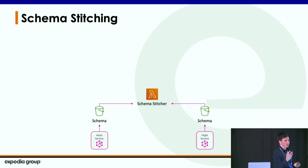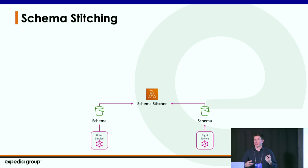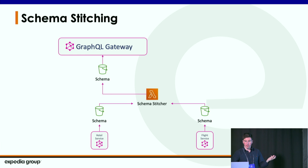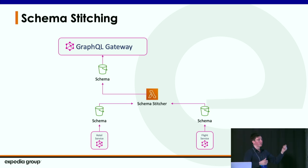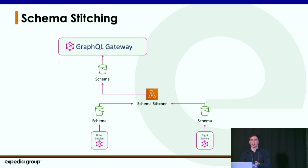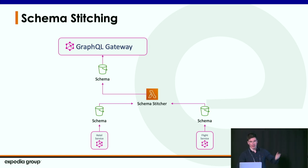We now have a new model: at build time when a change is made and approved to a schema like the hotel service, they push their schema to an S3 bucket. That S3 bucket is watched by a Lambda which has our schema stitching code. Every individual service can have their own bucket. The Lambda is notified whenever a bucket update is made, gets the latest version, stitches the schema, and pushes out to another S3 bucket — the global schema bucket — giving us schema history. The gateway is then notified with a push model whenever there is a new schema.